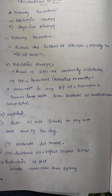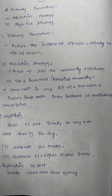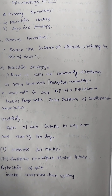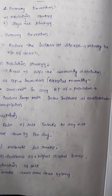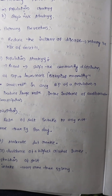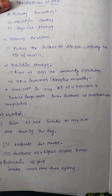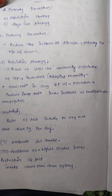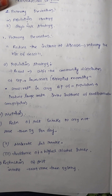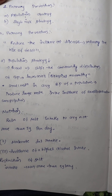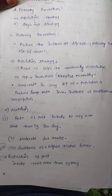How do we prevent hypertension? We have primordial prevention, primary prevention, and secondary prevention. Primary prevention reduces the incidence of disease — reducing the risk of onset. The population strategy goal is to shift the community distribution of BP to lower levels or biological normality. A small reduction in average BP of the population produces a large reduction in the incidence of cardiovascular complications.